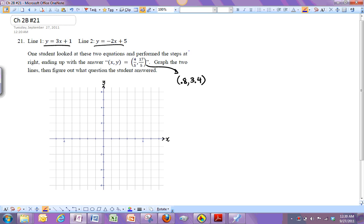So the problem says a student performed the steps at right, but there are no steps over here yet, so we're going to do that together at the end of the problem so you can see how to actually solve this perfectly.